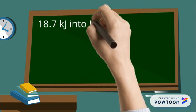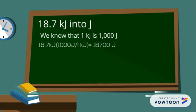First, we need to convert 18.7 kilojoules into joules. We know that 1 kilojoule is 1,000 joules. So we put 18.7 kilojoules multiplied into 1,000 joules over 1 kilojoule, which gives us an answer of 18,700 joules.